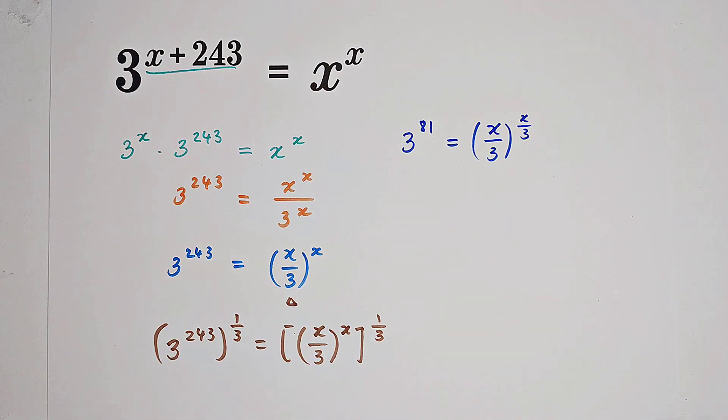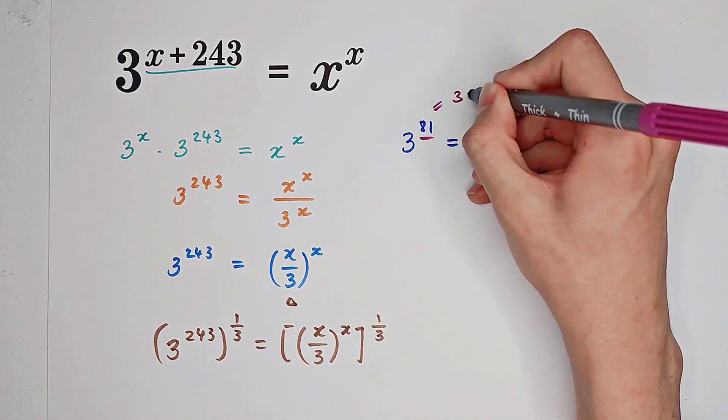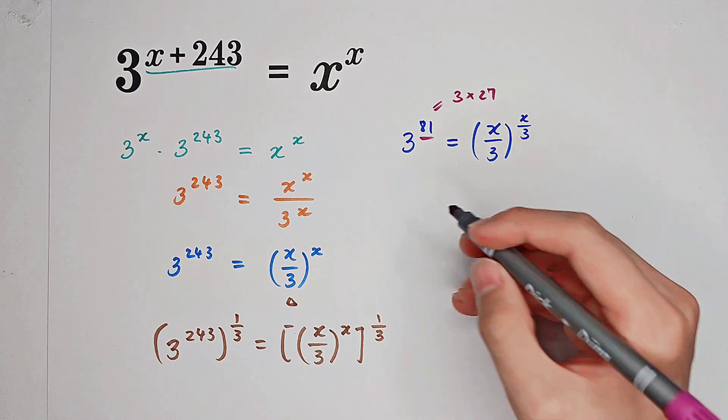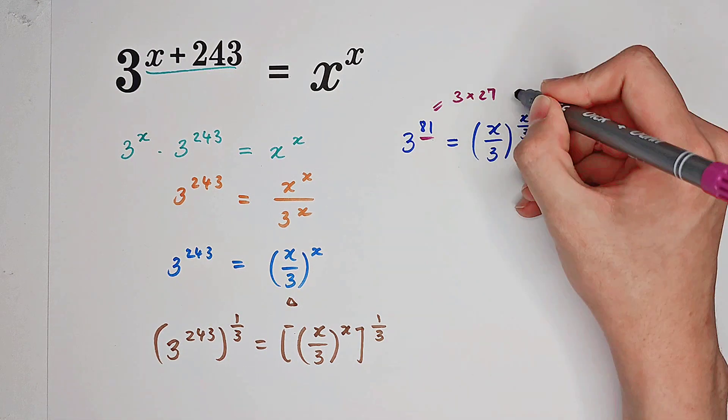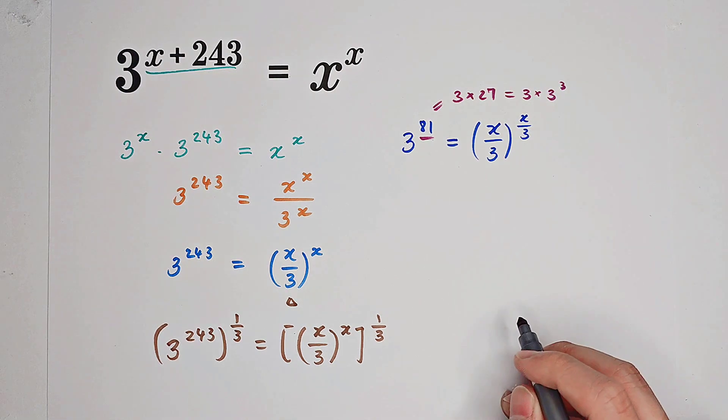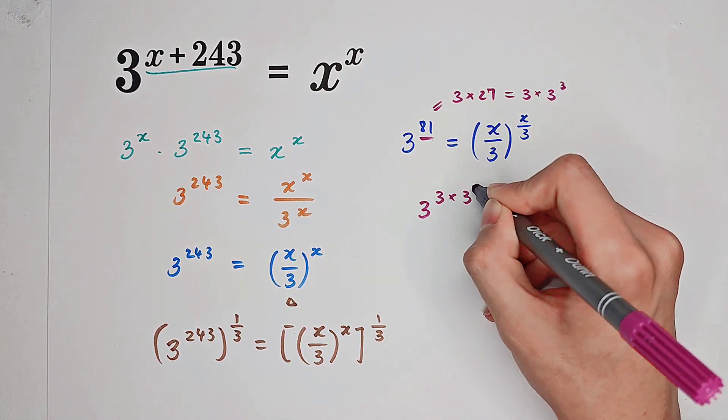Very good. What we can do now is, look—this 81 is 3 times 27. And we know that 27 is 3 cubed. So the left-hand side is actually 3 to the power of 3 times 3 cubed.